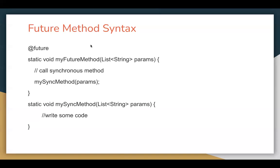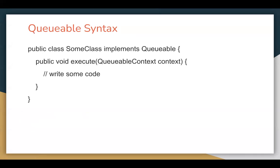This is the syntax of a future method. In the case of a future method, you need to use the @future annotation for a particular method. If you use the @future annotation, that method will work as a future method and will be executed asynchronously. Here the method name is myFutureMethod, and it is receiving a list of strings as parameters. String is a primitive type, but using a collection of primitives is permissible. Inside the future method, we are calling the mySync method and passing parameters — mySync is defined individually so it can be called directly or through the future method.